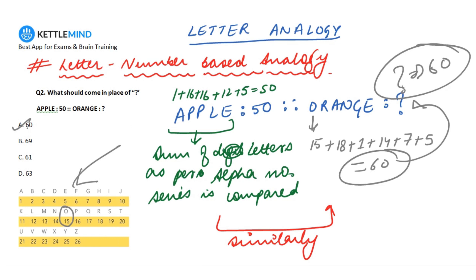The first option also says 60, so the answer is correct. In this specific question, the number was the sum of letters as per the alphabet-number series. The pattern was: sum of all the alphabets of the word as per the alphanumeric series, compared to its sum. Since we derived from apple which was compared to 50, on the similar lines we evaluated the question mark for orange.